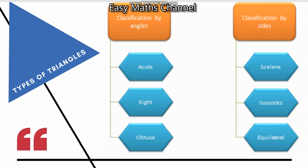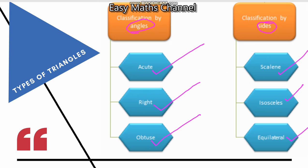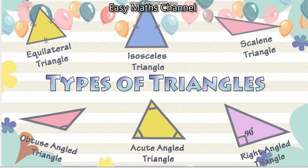So, types of triangles. Types of triangles are based on angles and sides. If we base both, we divide the triangles. We classify them. Based on angle: right angle, obtuse angle, acute angle. Based on side: scalene triangle, isosceles triangle, equilateral triangle. These are six triangles — three based on angles and three based on sides.